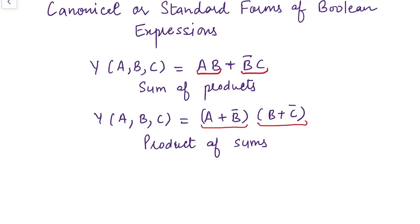We have seen that these Boolean expressions can be simplified using Boolean laws or rules as discussed in the previous video. However, reducing a complex Boolean expression using basic laws is more difficult and requires the use of certain techniques. Those techniques require the Boolean expressions to be expressed in certain standard forms, which are known as canonical forms. In this video, I am going to discuss the canonical or standard form of Boolean expressions.